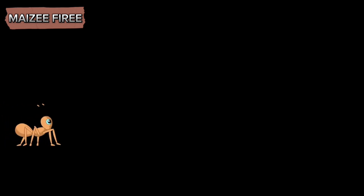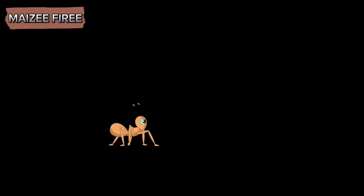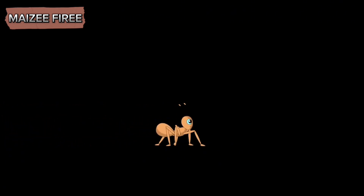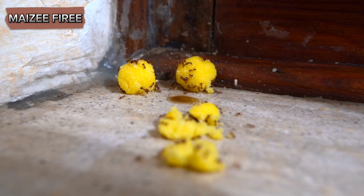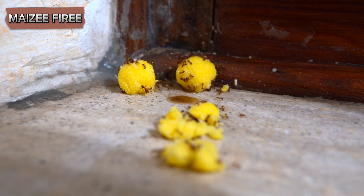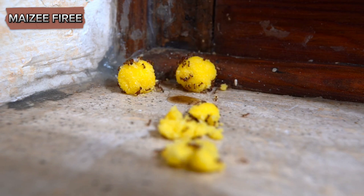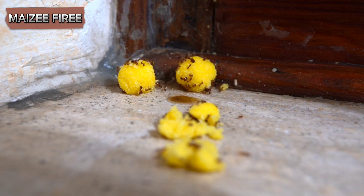The choice of toxicant, formulation of the bait, and strategic placement are all critical factors that determine the success of ant control efforts. Understanding the biology and behavior of ants, as well as the potential for resistance and environmental impacts, is essential for the effective and responsible use of ant poison.